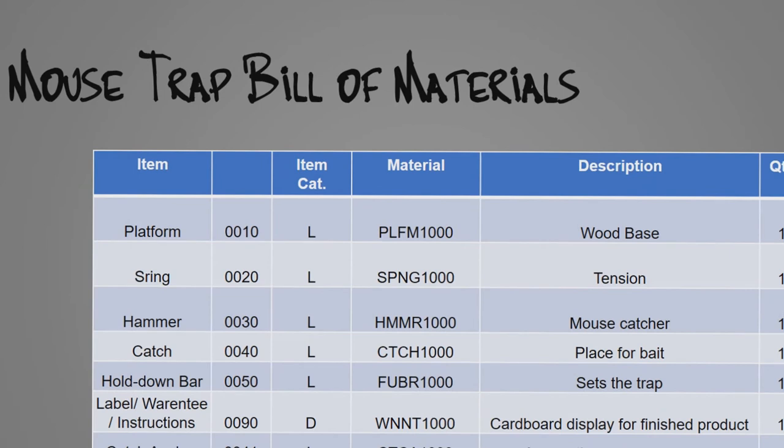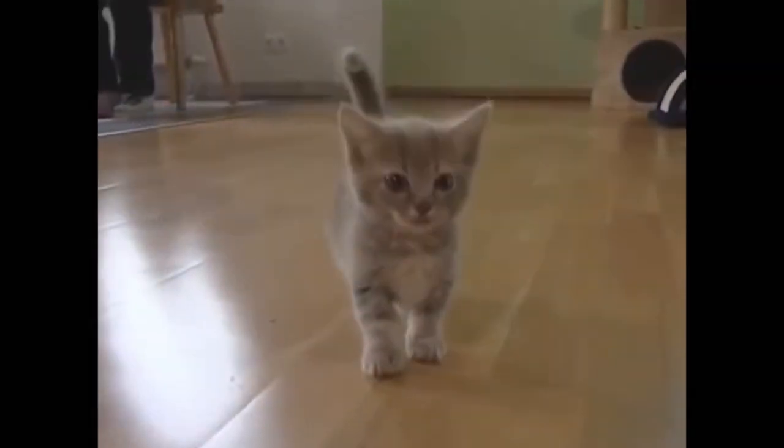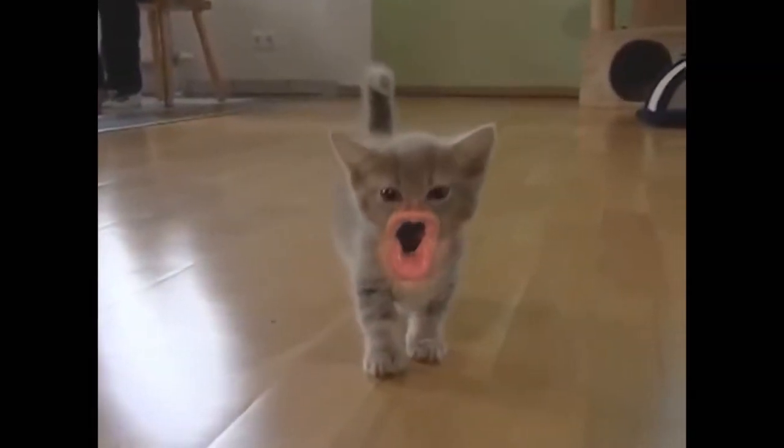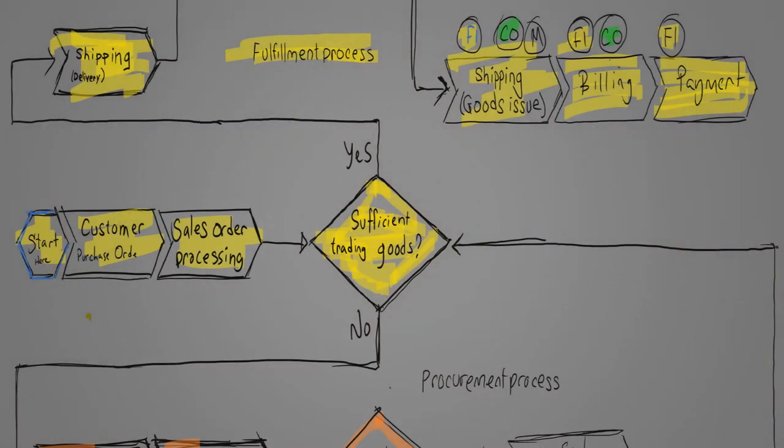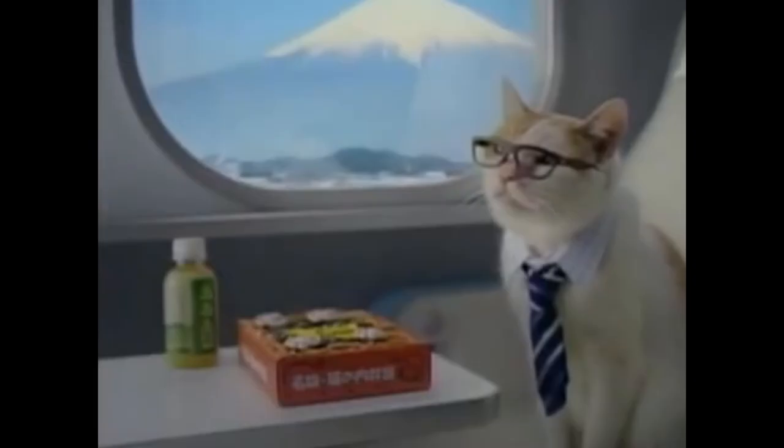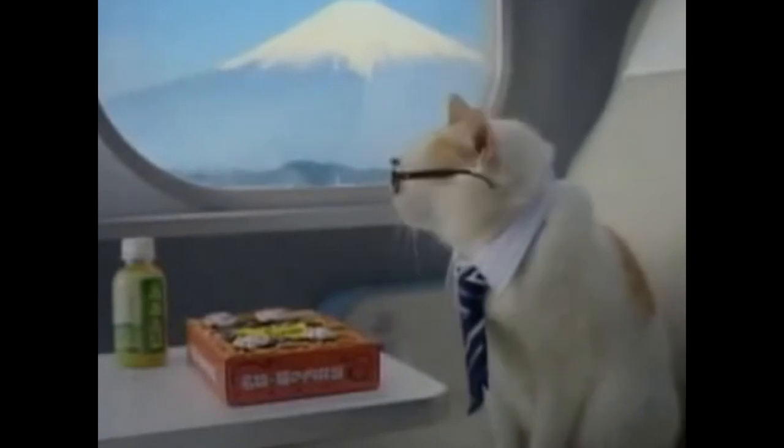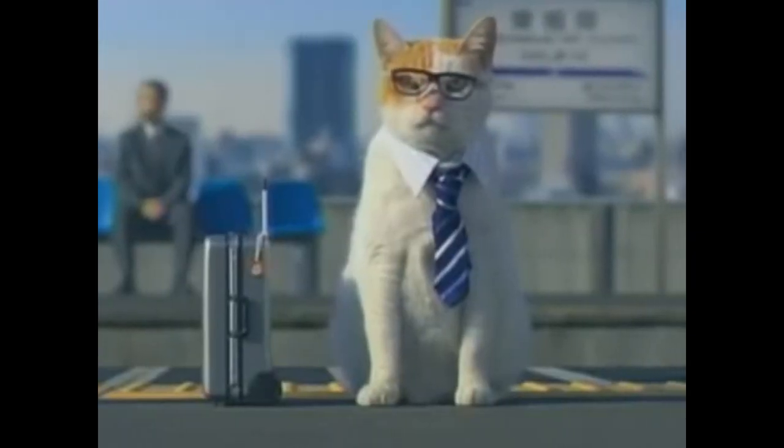The bill of materials lists all the items needed for one completed and packaged mousetrap. Is your head spinning yet? Because there's more. Accounting must know the total value of all the materials and trading goods throughout the process. The financial impact and controlling impact are tracked with material documents, and all these things need to happen simultaneously. Sometimes millions of transactions are happening all over the world.